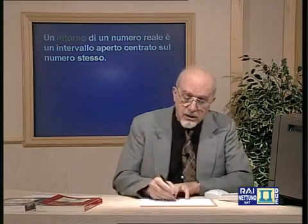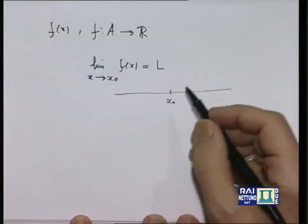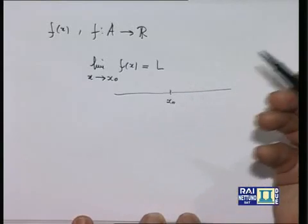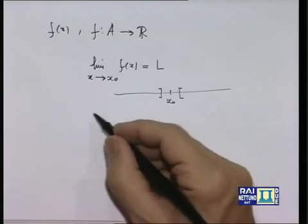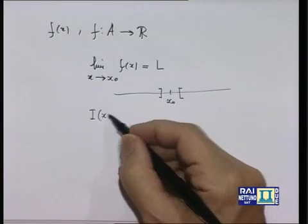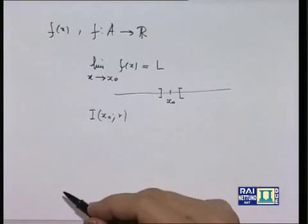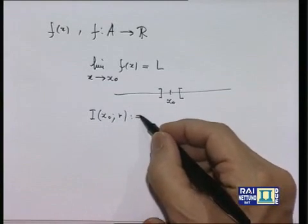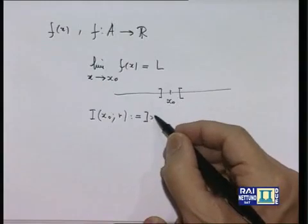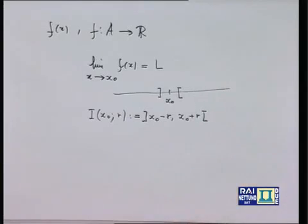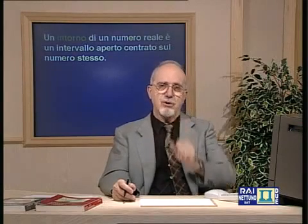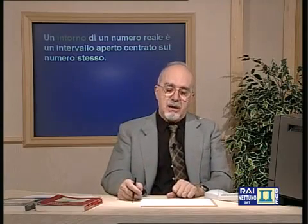Dato un numero x₀, l'intorno di centro x₀ e raggio R — scritto come I(x₀, R) — non è altro che l'intervallo aperto (x₀ − R, x₀ + R). È un intervallo aperto centrato nel punto x₀ con raggio R. La parola 'raggio' sarebbe più appropriata per il piano piuttosto che per la retta, ma per analogia si parla comunque di raggio.